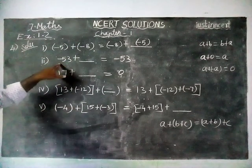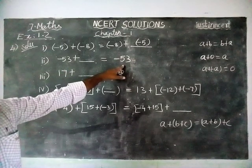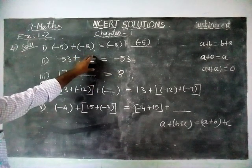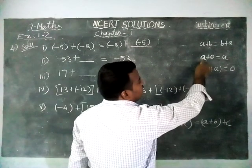Second question, minus 53 plus dash is equal to minus 53. This is according to additive identity. When we are adding an integer plus 0, we will get the same integer.